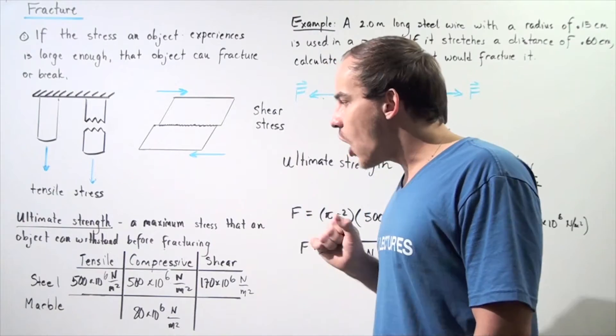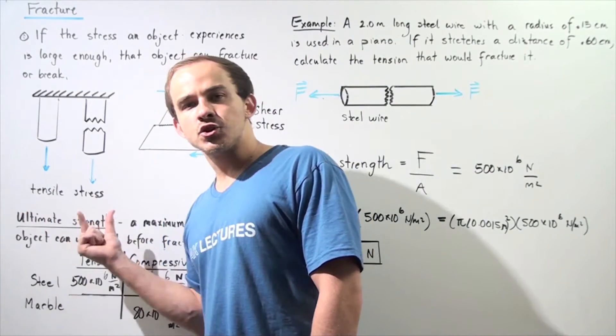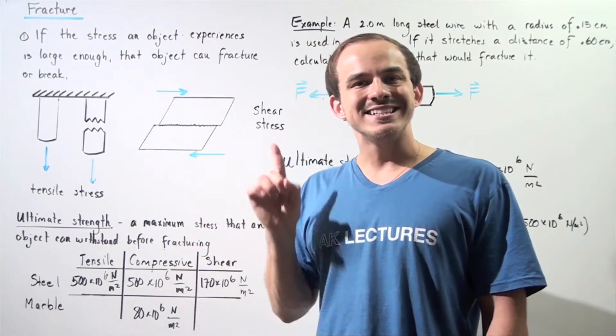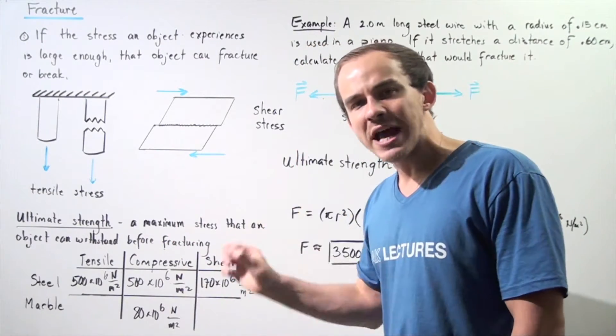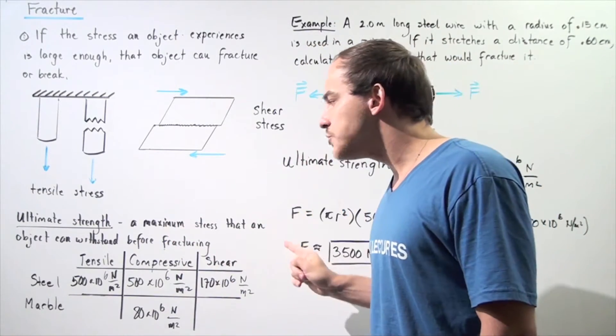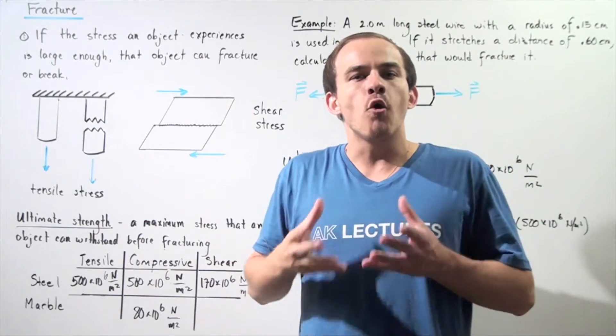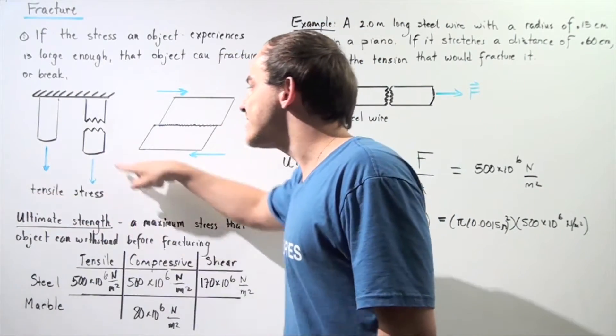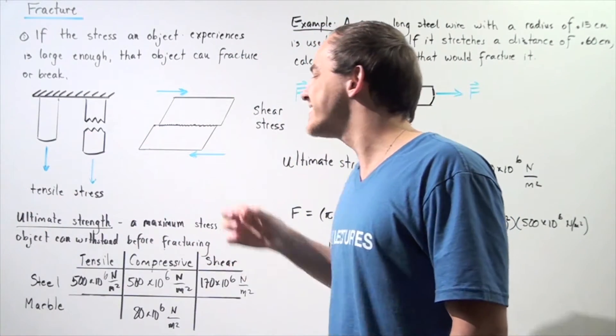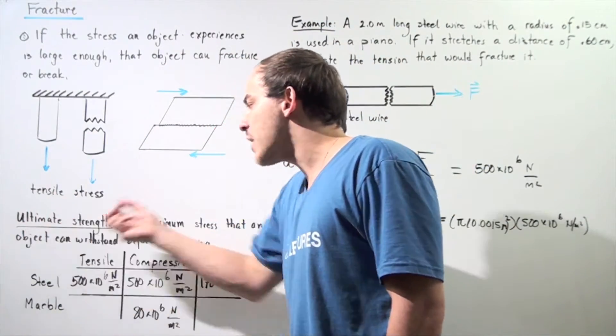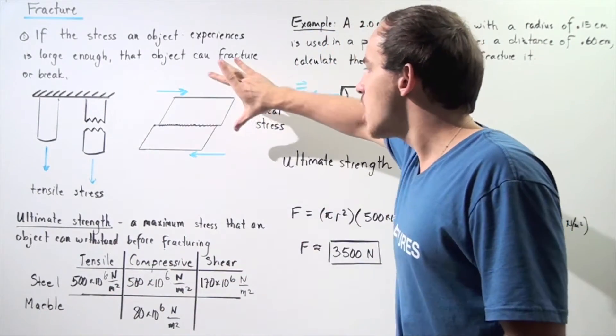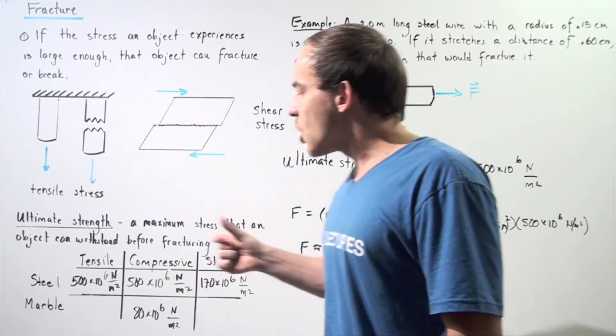Now, let's talk about the ultimate strength of our object. The ultimate strength of the object is simply the maximum stress value that an object can withstand before it actually fractures. So if the tensile strength of the object exceeds its ultimate strength, that object will fracture and the same goes for this object.